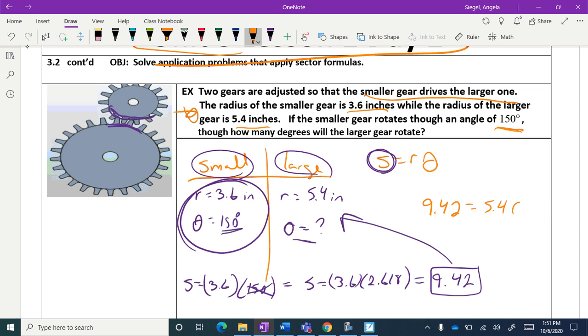I'm going to say 9.42 equals 5.4 theta, so I'm just going to divide both sides by 5.4 and I get theta equals 1.745. But let's go ahead and answer the question: how many degrees will the larger gear rotate?